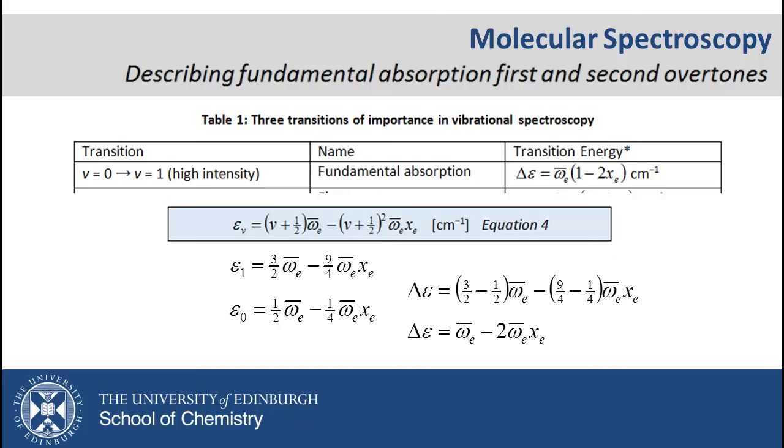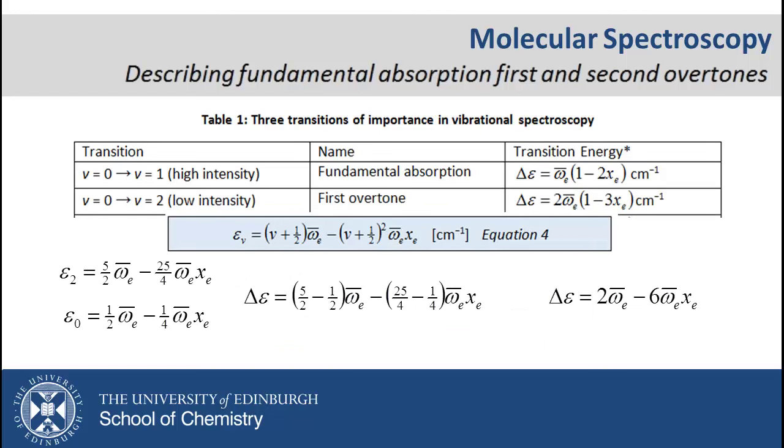We can do the same for the first overtone, where we are now interested in the V equals 0 and V equals 2 states. Stating these expressions and then calculating the difference gives us the target expression.